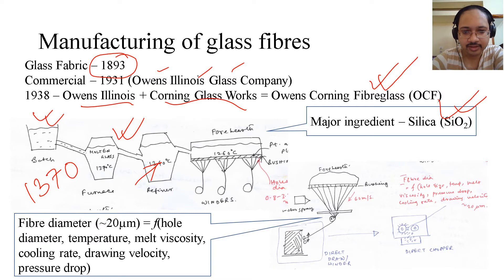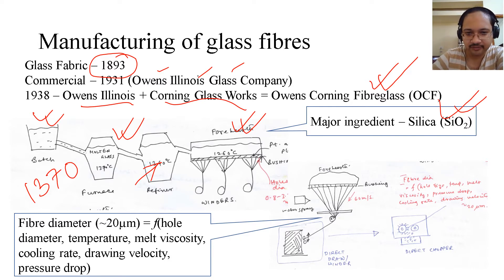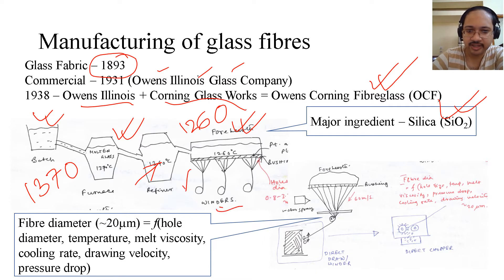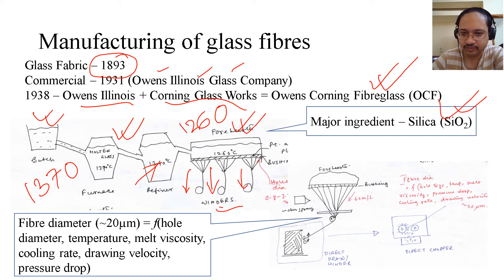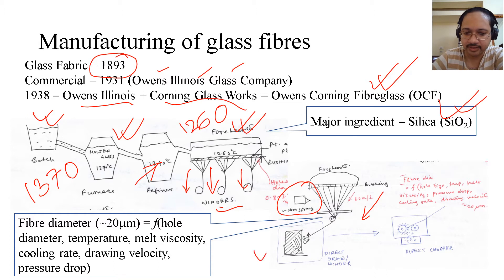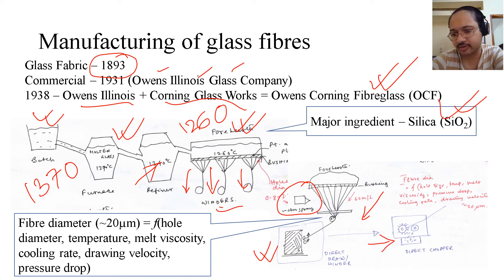Then we refine it at a relatively lower temperature of 1,340 degrees Celsius. Then we keep it on a forehearth, where we are actually preparing it to draw fibers. The temperature there is around 1,260 degrees Celsius. Then there are winders, so you extract and wind the fibers. In the forehearth you have a water spray for cooling, and the drag velocity is 60 meters per second. You either roll it on a winder for long fibers, or simply chop it to get chopped glass fibers using a direct chopper.